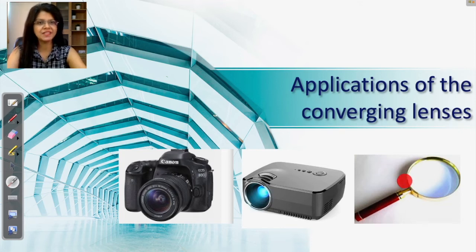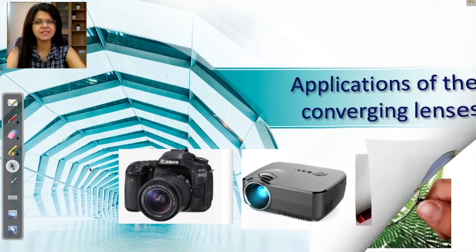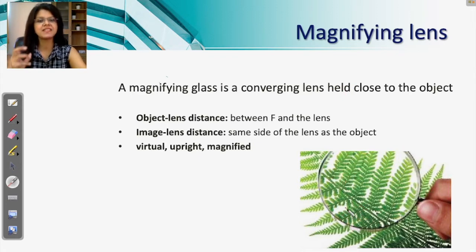Let us complete our last video on the applications of converging lens. In this video we are going to learn about magnifying lens. In the earlier videos we have understood the working of cameras and projectors. A magnifying lens is a converging lens held close to our object. As you see in the picture, if it is held close to the object, the tiny object behind it appears magnified.